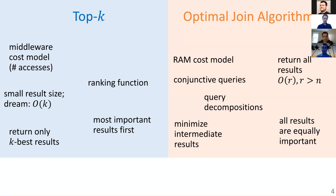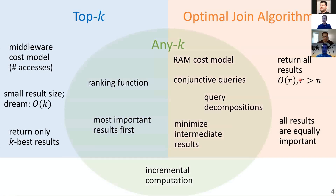There are a couple of notable differences between Top K and Optimal Join Algorithms. One is the cost model. In Top K, we pay for accesses to databases. In Optimal Join Algorithms, we use the common RAM cost model for in-memory processing. In Top K, we care about very small result sizes — ideally the cost is just the number of top results. In join algorithms, we want to return all results, which can be far larger than the database itself.